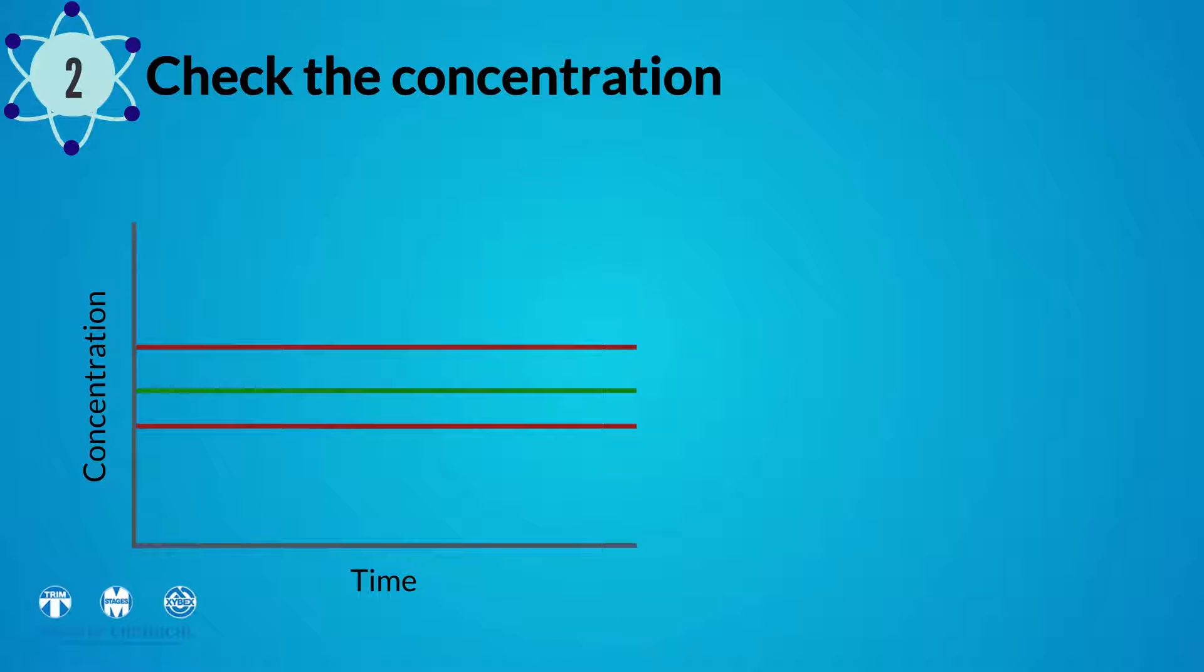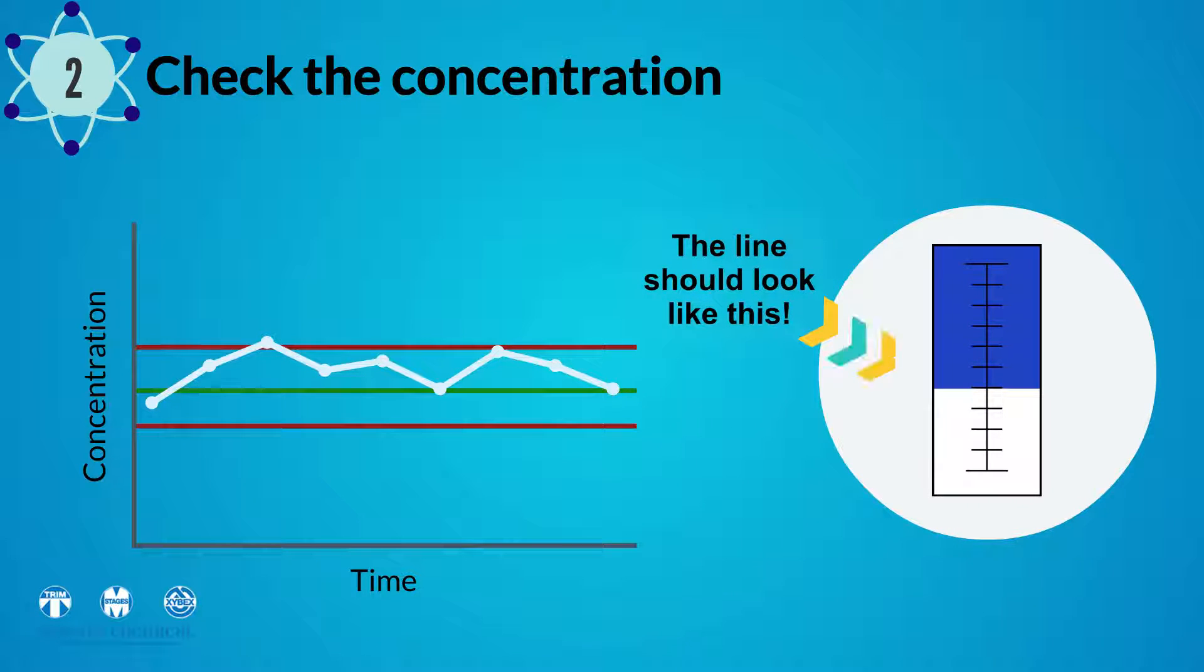Second, check the concentration. Every metalworking fluid is designed to run within a certain range. After topping off the sump, use a refractometer to check the concentration and adjust to the recommended range.